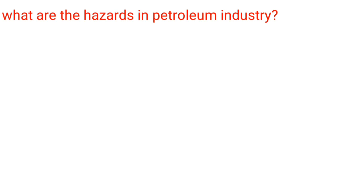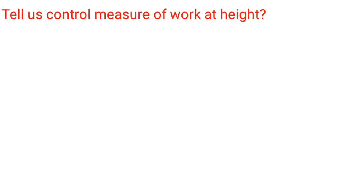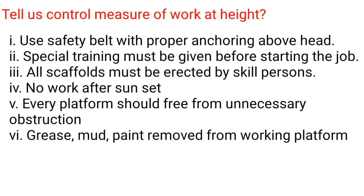What are the hazards in the petroleum industry? Fire, explosion, general hazards, and frostbite. Control measures for work at height: 1. Use safety belt with proper anchoring above head level. 2. Special training must be given before starting the job. 3. All scaffolds must be erected by skilled persons. 4. No work after sunset. 5. Every platform should be free from unnecessary obstruction, grease, mud, and paint.